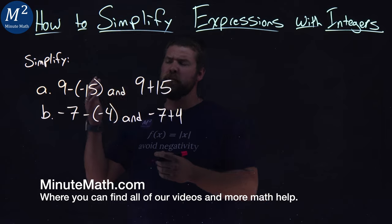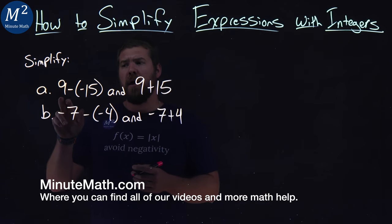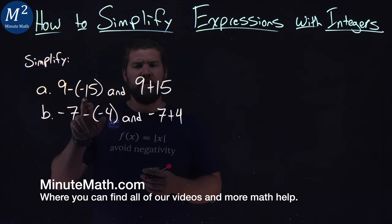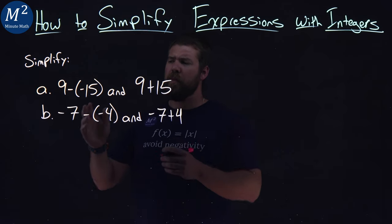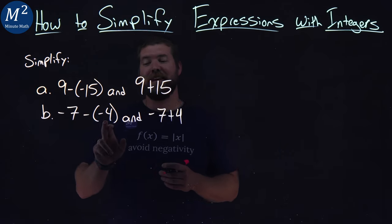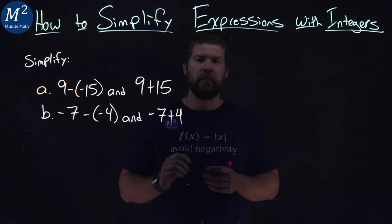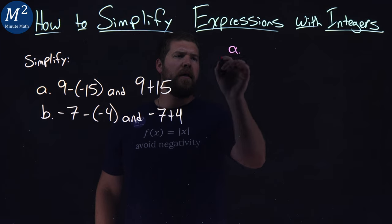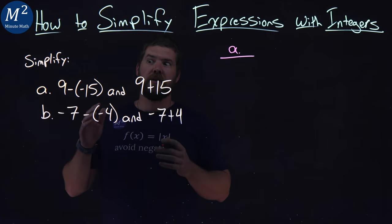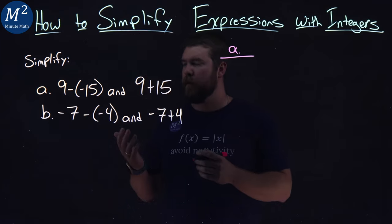We're given two problems here, each with two parts. 9 minus a negative 15 and 9 plus 15, we have to simplify that. In the second one, we'll have negative 7 minus a negative 4 and negative 7 plus 4. We'll start with Part A. And this is broken down this way so you can see how these are actually the same.